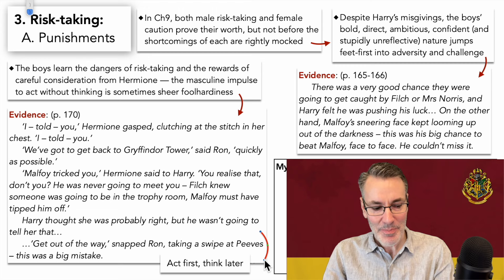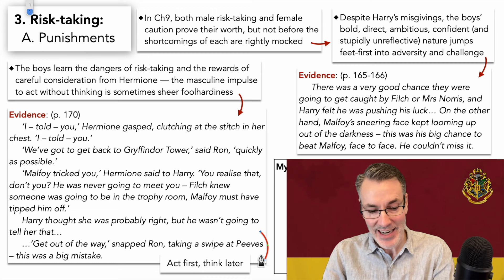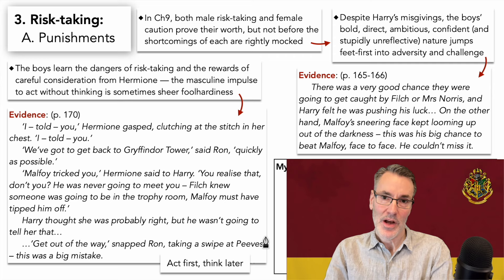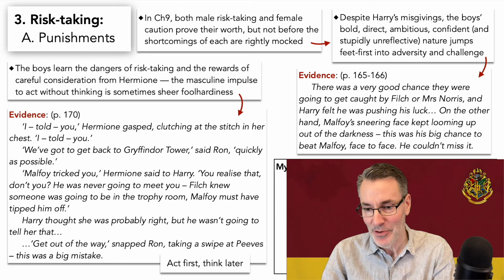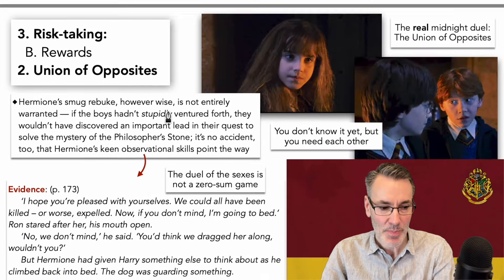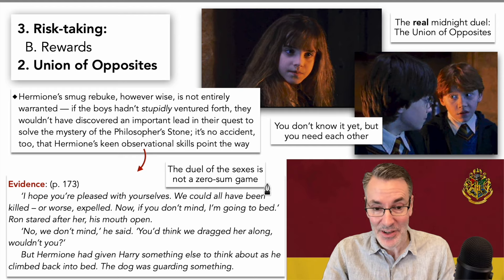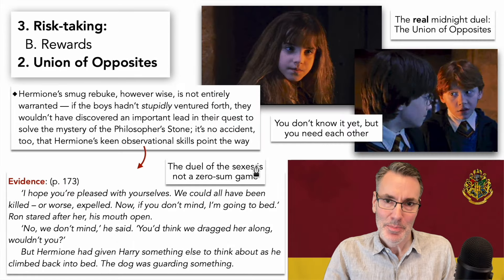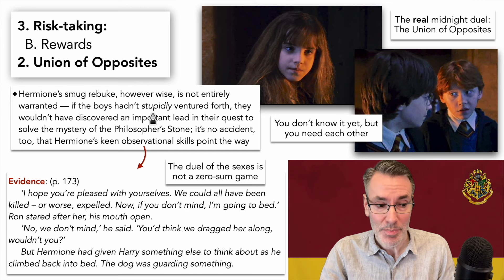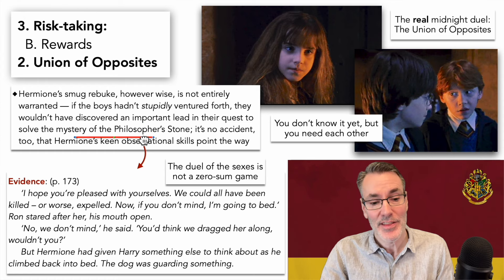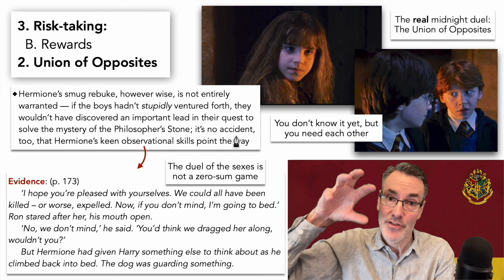Then Ron really, really stupidly — when they're confronted with Peeves, he acts without thinking, takes a swipe at him. That's a male thing to do — it's more in the male to just act without thinking, and of course that leads them into more trouble. Risk-taking certainly has its punishments, but is Hermione's smug rebuke justified? No, because they benefit greatly from that risk-taking. Yes, the boys get punished for their foolhardy risk-taking, but Hermione's smug rebuke, however wise, is not entirely warranted. If the boys hadn't stupidly ventured forth, they wouldn't have discovered an important lead in their quest to solve the mystery of the Philosopher's Stone. If you don't take risks, you don't get any benefits at all — you stay in the safe zone forever and never go on your adventure.